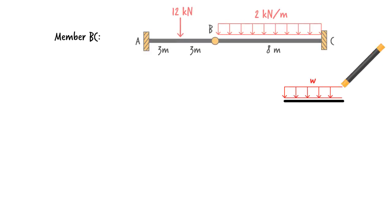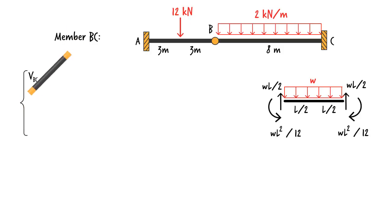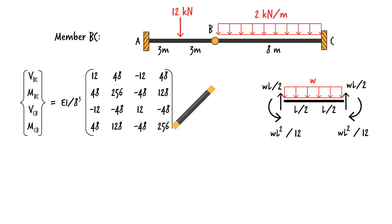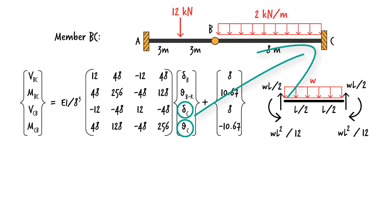Segment BC is subjected to a uniformly distributed load. Here are its fixed end forces and here is the system of equations for the segment. Since delta C and theta C are zero, we can rewrite the equations this way.